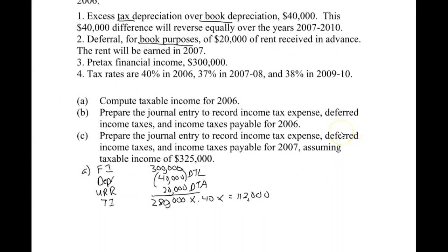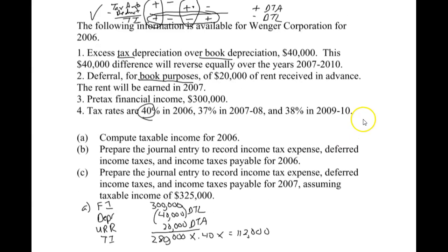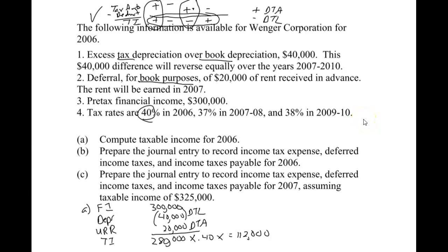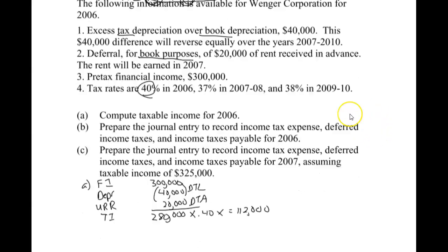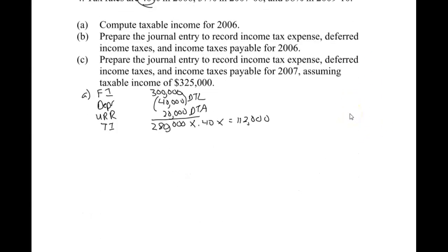I used 40%, which came from the 2006 rate, and I'll use the other rates for the next years. Looking at the shortcut, we can see rent was the first column and depreciation was that one, so we can reason through it. Just let that shortcut help guide you — it's okay to understand why, but we'll move ahead with this example.